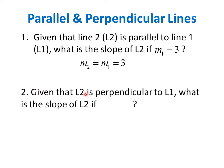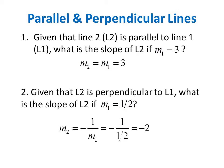Second problem: given that line 2 is perpendicular to line 1, what is the slope of line 2 if the slope of line 1 is 1/2? We know that the slope of a perpendicular line is the negative reciprocal of the slope of the other line. So the slope of line 2 is negative 1 divided by 1/2. Simplifying, the reciprocal of 1/2 is 2, therefore the slope of line 2 is negative 2.